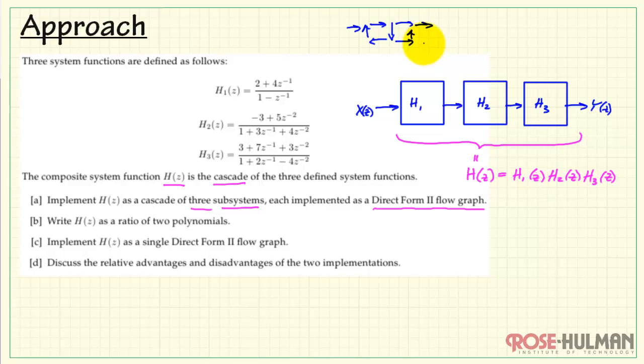H1 will have this general appearance because it's a first-order function. H2, being a second-order function, would look like this, and H3 is also a second-order function. Because these subsystems are in cascade, we simply join them together to form the overall system.